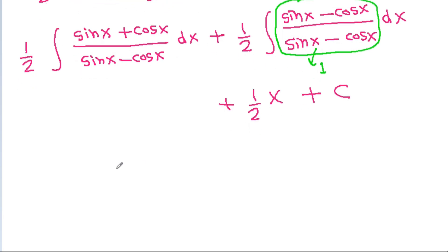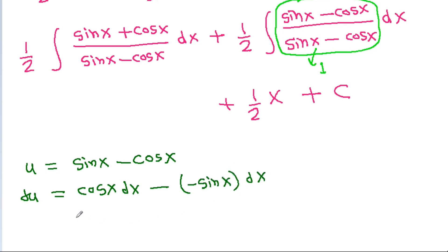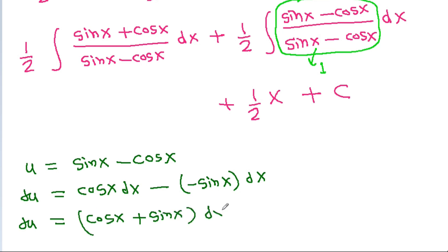And if we take u equal to sin(x) minus cos(x), then du will be equal to cos(x) dx minus the differentiation of cos(x), which is negative sin(x) dx. So we get du equal to (cos(x) + sin(x)) dx.